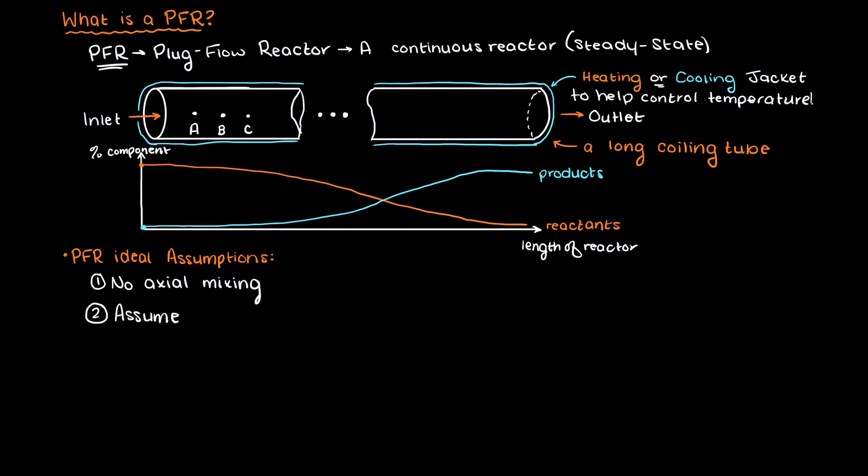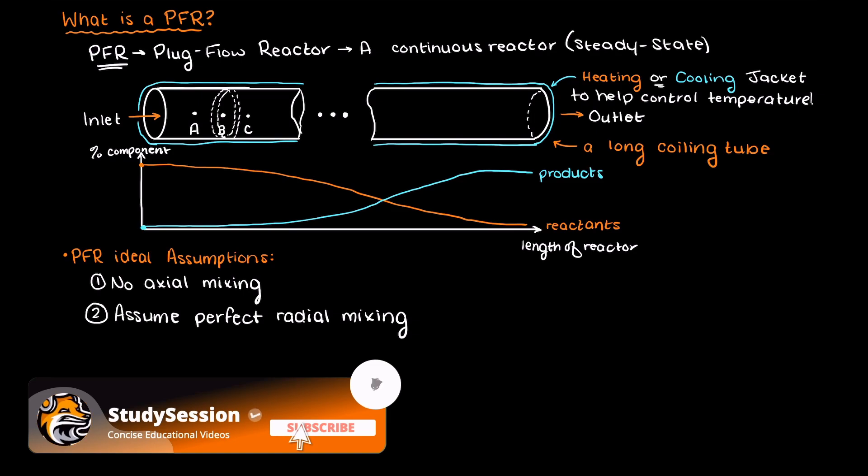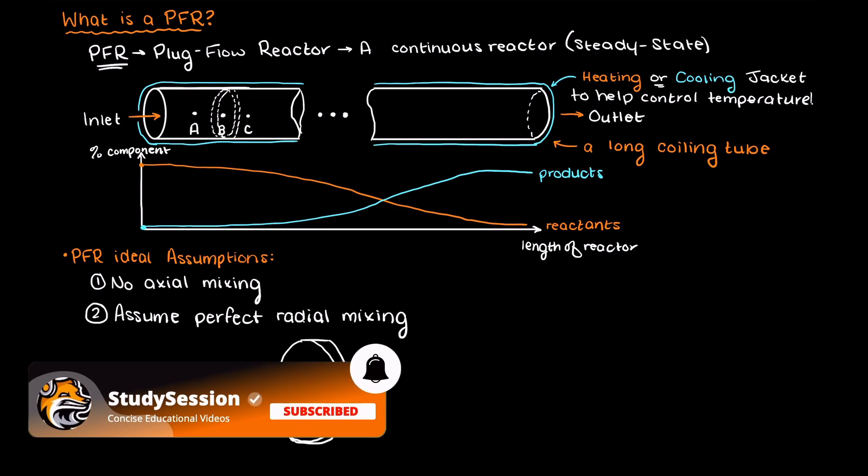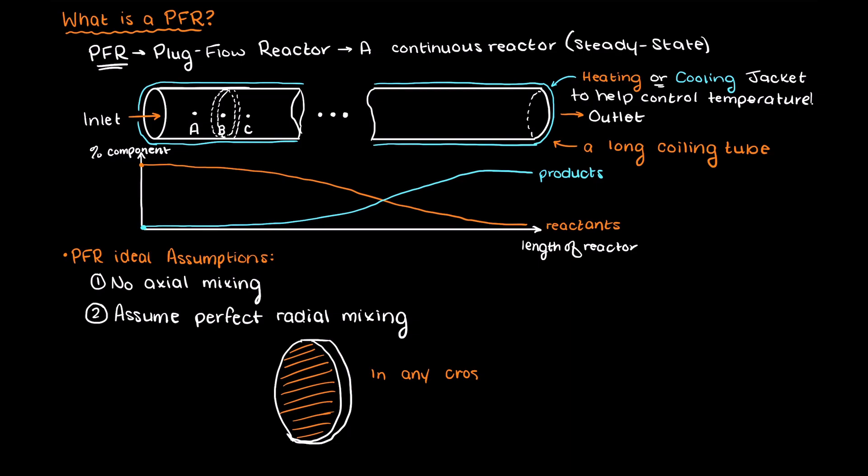Secondly, and the reason for our first assumption, is that we assume perfect radial mixing. Which means if we were to take a cross section of any point in our ideal plug flow reactor, then we would have the exact same composition and temperature throughout that entire cross section.